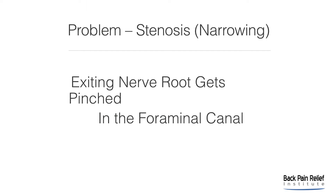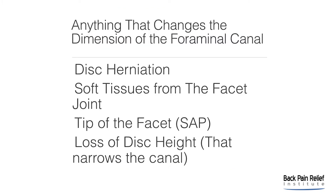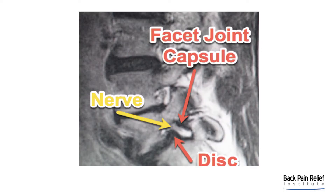The problem is stenosis or narrowing, and the exiting nerve root gets pinched in the foraminal canal. The main reason this can happen is the superior articular process of the ascending facet, which can press on or indent the exiting nerve root. Anything that changes the dimensions of the foraminal canal — such as a disc herniation, soft tissues from the facet joint like a synovial cyst, the tip of the facet, the superior articular process or SAP, or even loss of disc height — can contribute to foraminal stenosis. We can see pressure being exerted by the disc pushing backward and the facet joint capsule pushing forward, with the nerve flattened and squashed in between.